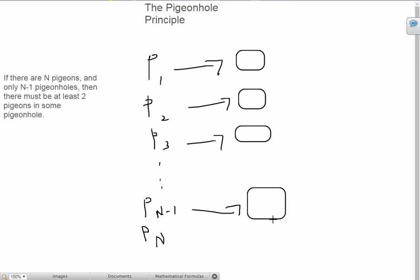So all the pigeons till Pn minus 1 can have their own pigeonhole, but when it comes to Pn, this guy is going to have no pigeonhole, so he'll have to share with either Pn minus 1, or P3, or basically any of the other pigeons.